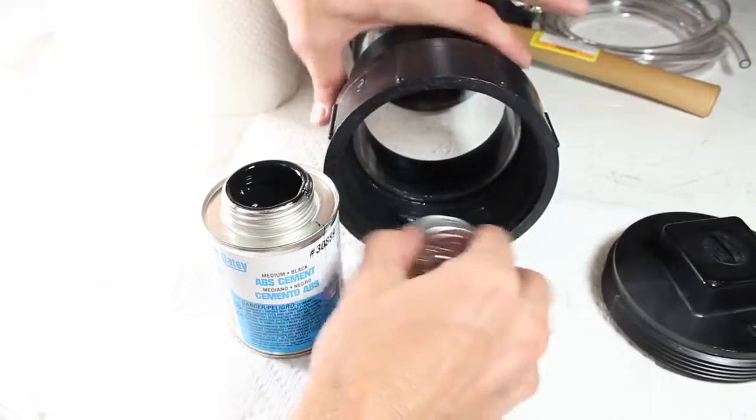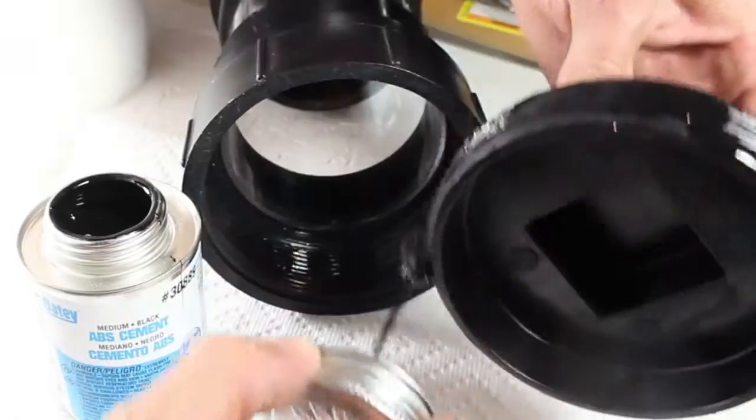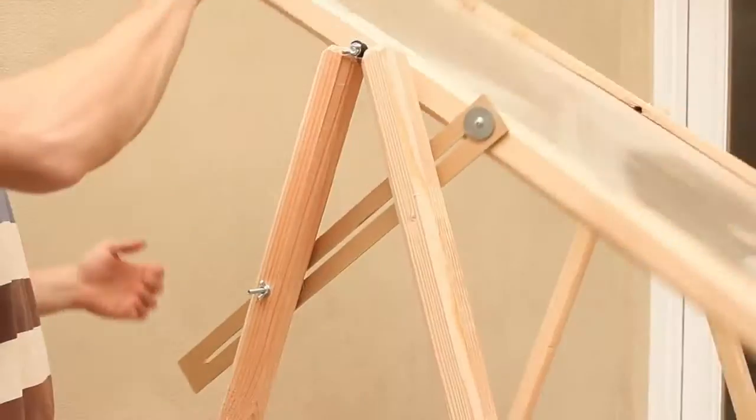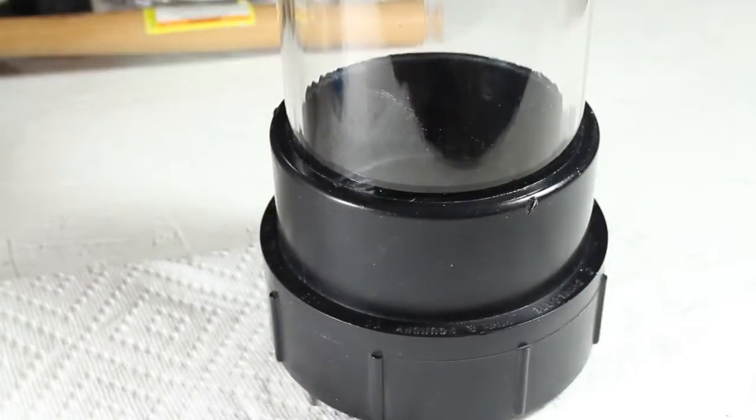I'm going to seal the bottom with a 4 inch ABS clean-out plug and some ABS cement. The gooey black cement is applied to the threads of both parts, then I'll use this piece of scrap wood from my solar scorcher frame project to help screw it in tight. The excess is removed, and we can let it sit here to cure.